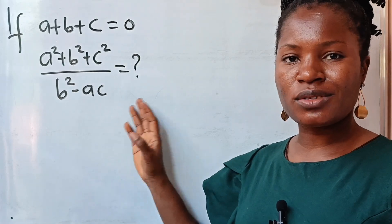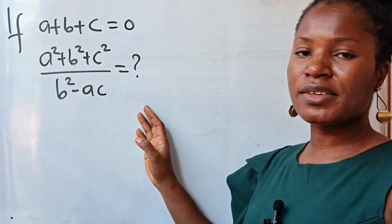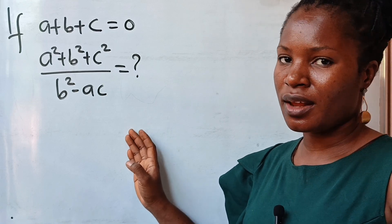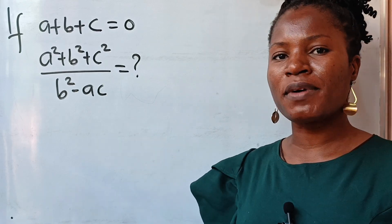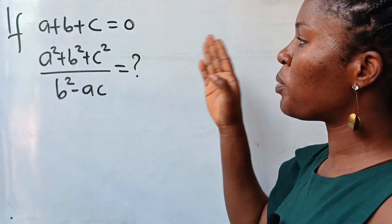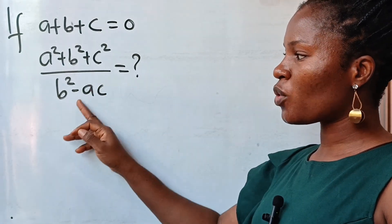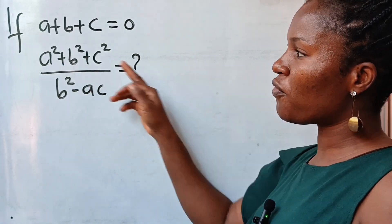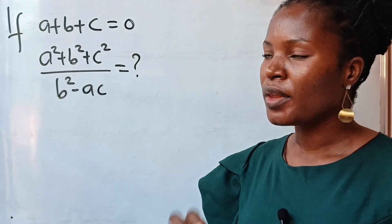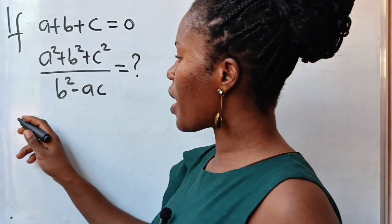Many students felt this particular question, but it is a very easy question. Now let us solve it together. Welcome back to my channel. Today we are asked to solve for a squared plus b squared plus c squared divided by b squared minus ac, if a plus b plus c equals zero. Now first, let us write this out.